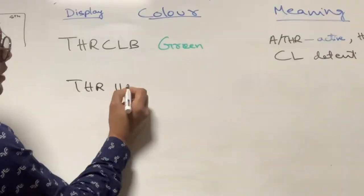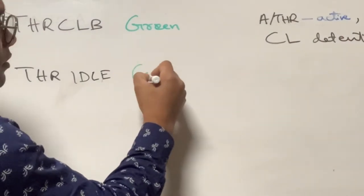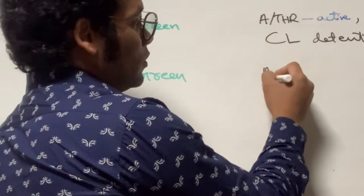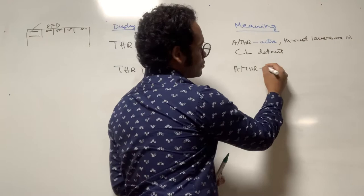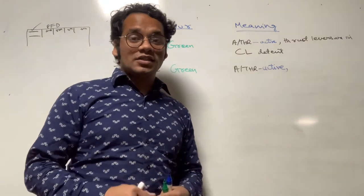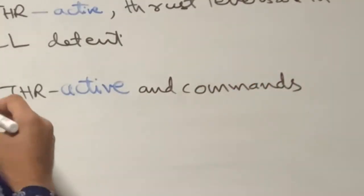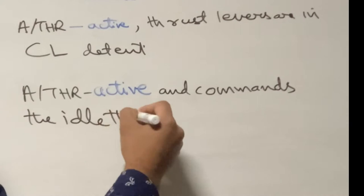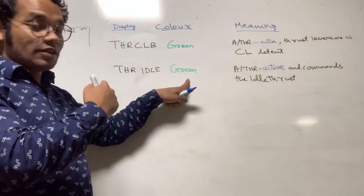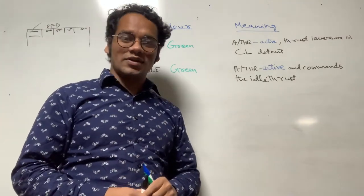Next is THR IDLE — thrust idle — which also appears in green color. It appears in the first line when autothrust is active and commanding idle thrust.